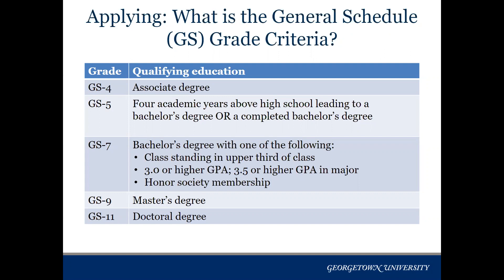GS-9 is the equivalent of a master's degree and GS-11 is the equivalent of a doctoral degree. Now this is just talking about education. If you have additional work experience — say you're a more mature undergraduate student or a master's student who has worked for a couple of years — you might be looking at higher levels. But primarily for undergraduates, you're going to be looking at GS-4s and 5s for internships, and no higher than a GS-7 unless you've worked outside of school for a year or two or more.